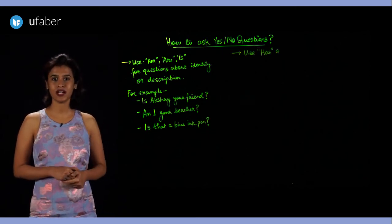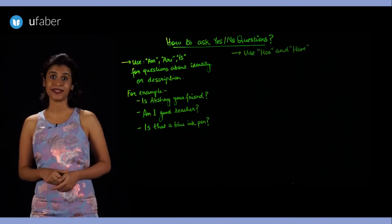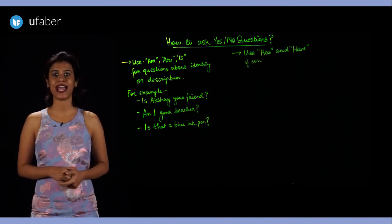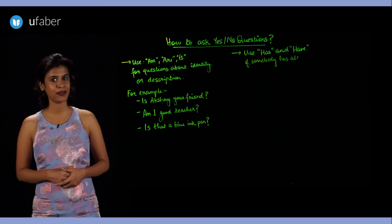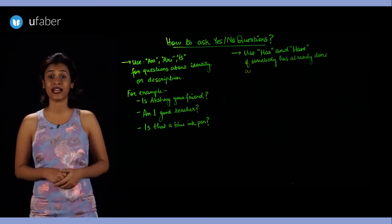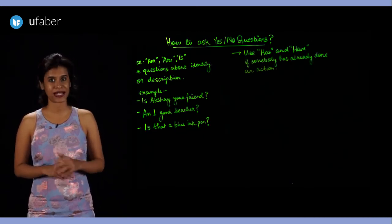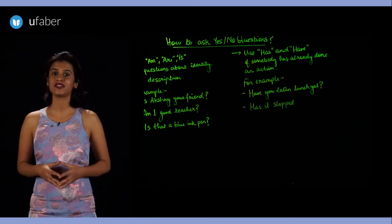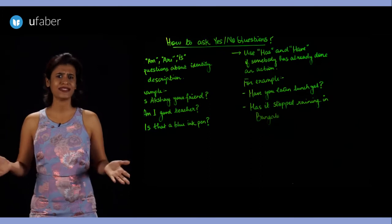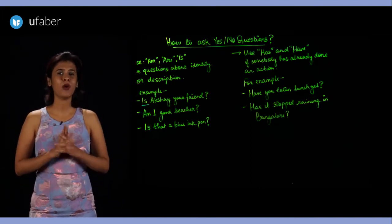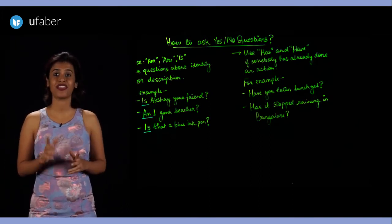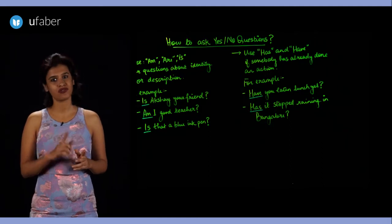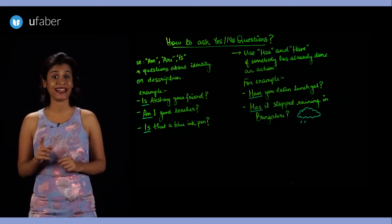The second rule is to use the verb have or has to ask if somebody has already done an action, meaning he or she has already done that thing. For example: Have you eaten lunch yet? Has it stopped raining in Bangalore? Notice that both questions are asking about things which have already been done or something that has already happened.